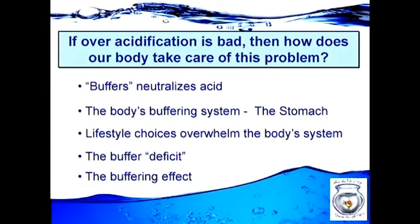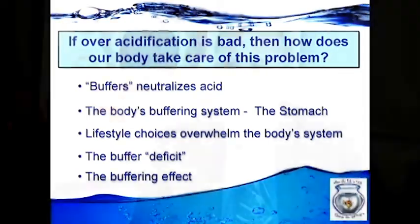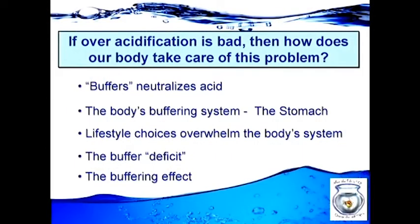Our body becomes overwhelmed with acid from lifestyle and dietary choices — if we smoke tobacco, chew tobacco, take pharmaceutical or recreational drugs, drink acidic water, or don't exercise to remove acids through the pores of our skin. So what we eat, what we drink, and even our thoughts can create an over-acidic body, overwhelming our body systems and pushing us into what I call the alkaline buffering deficit.